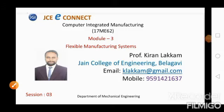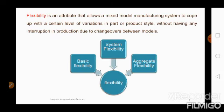In the last two videos we discussed about flexible manufacturing systems over two sessions. Today we will be discussing the third session on flexible manufacturing systems. We will continue from the end of the last session, where we discussed flexibility — an attribute that allows a mixed model manufacturing system to cope with a certain level of variations in part or product style without any interruption in production due to changeover between models.